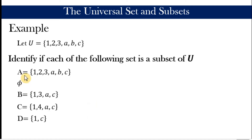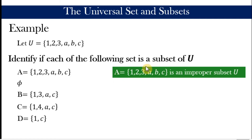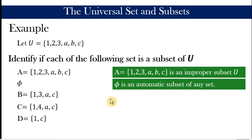Set A contains the six elements one, two, three, A, B, C — exactly the same as our universal set. So A is a subset, and more specifically it is an improper subset of the universal set because they are equal. The null set, as mentioned, is an automatic subset of any set — even without knowing the elements of the universal set.